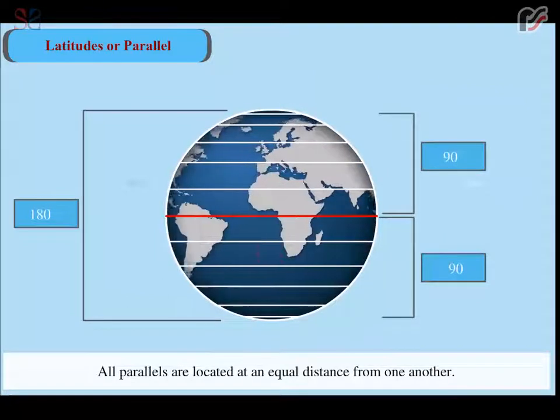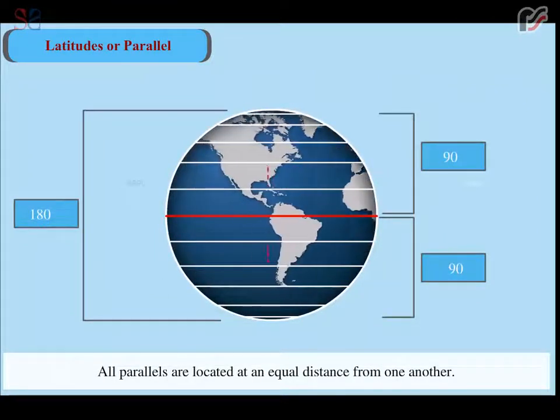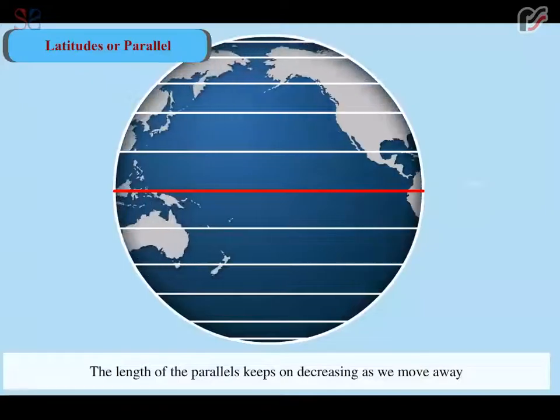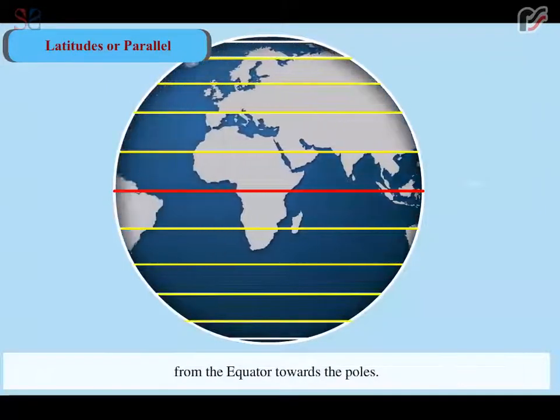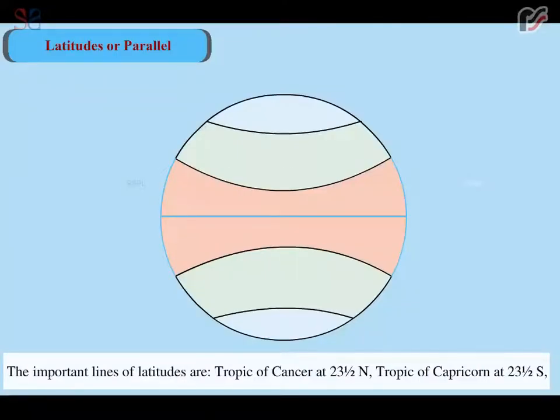All parallels are located at an equal distance from one another. The length of the parallels keeps on decreasing as we move away from the equator towards the poles.